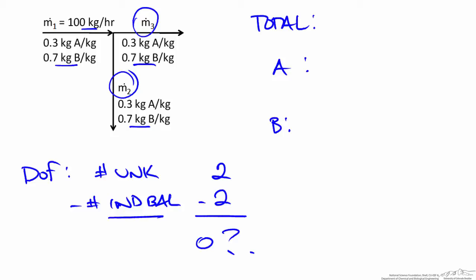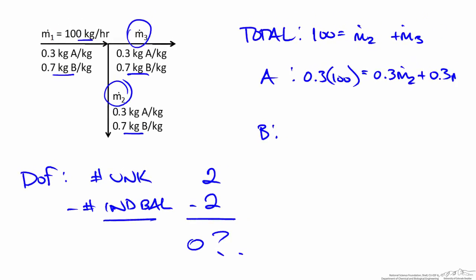All three of these balances will have the form of in equals out, so our total balance will be 100 equals M2 plus M3. A balance on A would be the mass fraction, which is 0.3 times the total flow rate of 100, and that equals 0.3 times M2 plus 0.3 times M3.